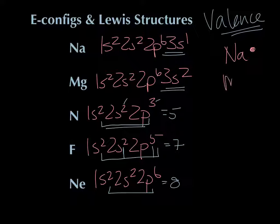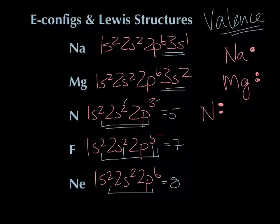For magnesium, write the symbol Mg and then put dots for the valence electrons — two valence electrons, both together since they're paired up in the s orbital. For nitrogen, there are five valence electrons: the two s electrons go together in the three o'clock position, and the three p electrons are spread out on the other sides. That's because in orbital diagrams we'd draw p1, p2, and p3 spread out — that's why they're drawn spread out here.